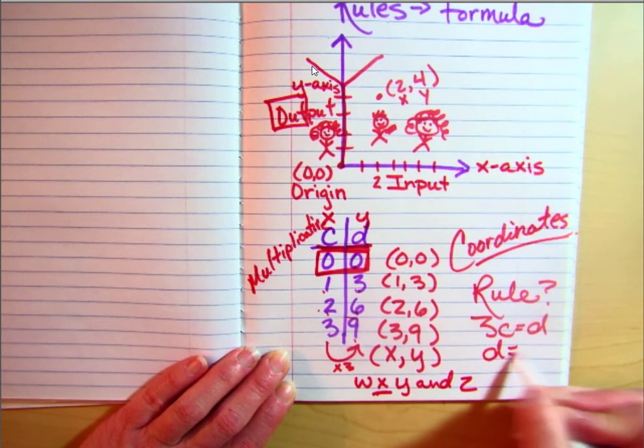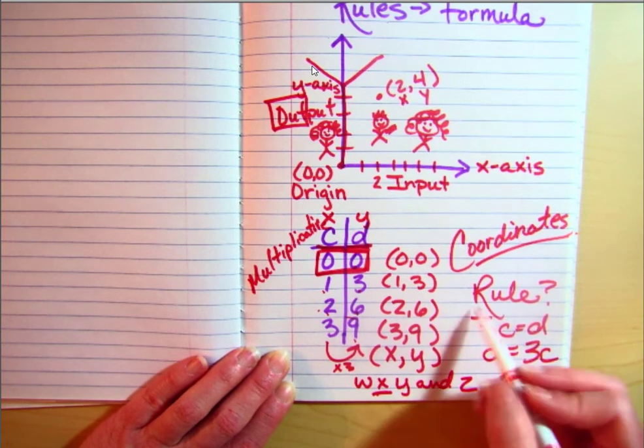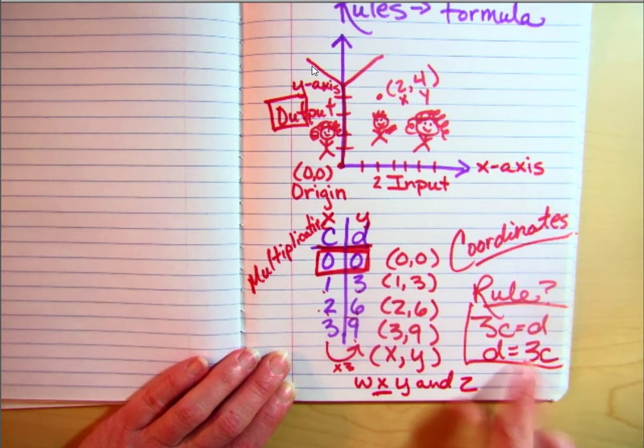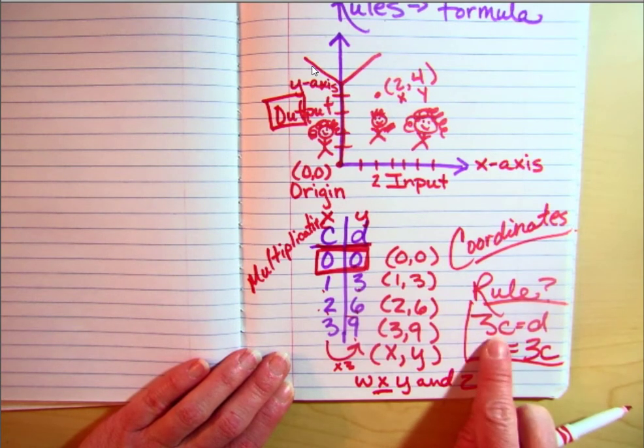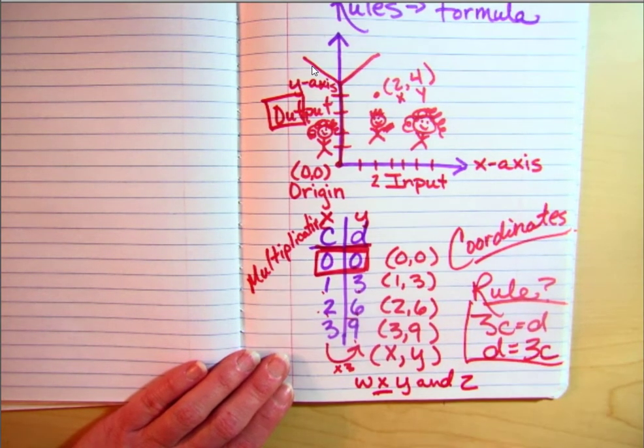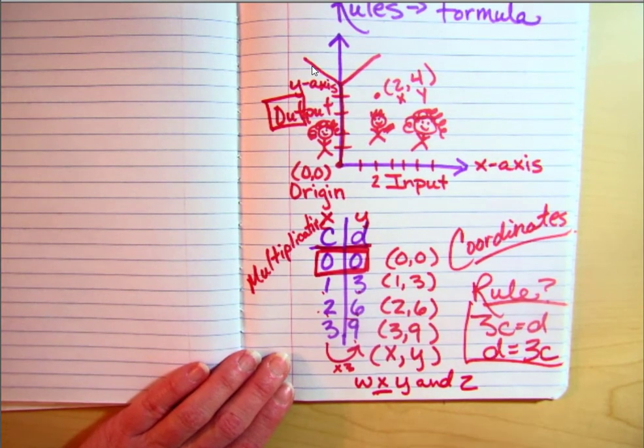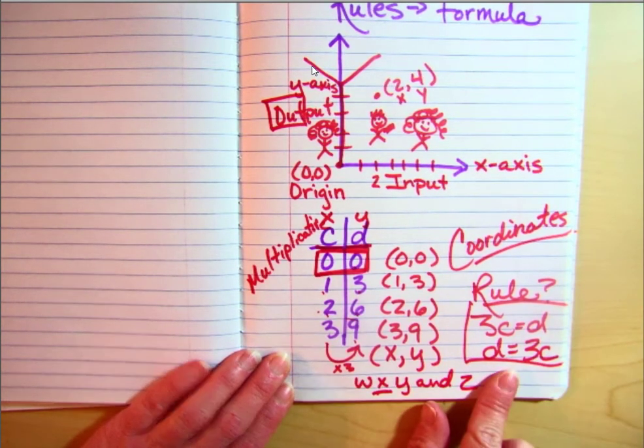Could I also write d equals 3 times c? Yes, they mean exactly the same thing. Sometimes your answer choices are going to have the coefficient in the front, and sometimes they're going to have it on the back. It doesn't matter. They're the same. So be careful on those.